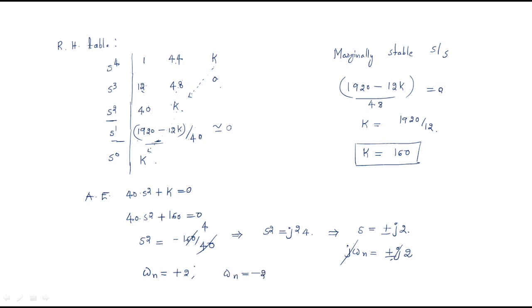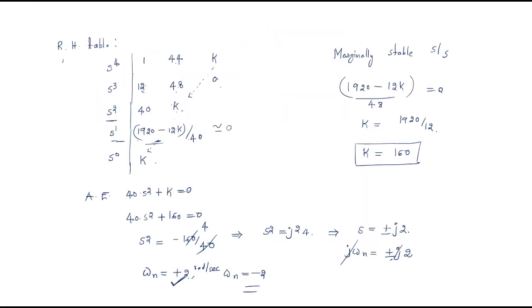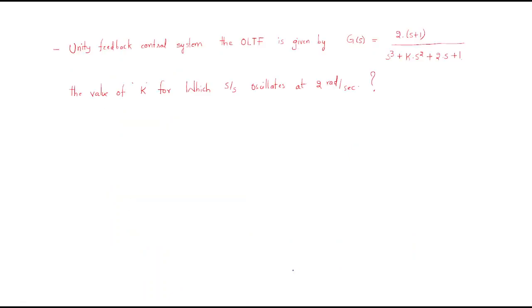From jωn equals ±j2, we get omega n equal to 2 radians per second. This is the method: given open-loop transfer function, convert to characteristic equation, apply Routh-Hurwitz table, set the appropriate row to zero for marginal stability, form auxiliary equation, and extract natural frequency.